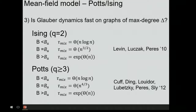We are not the first to look at this model. People have asked: is Glauber dynamics fast for the Potts model and the Ising model? For the Ising model, Glauber dynamics is fast up to some critical point, at which it has polynomial mixing time, and beyond the critical point the mixing time is exponential. For the Potts model, similarly: really fast with log n mixing time, then hitting a threshold at polynomial mixing time, and beyond the threshold it's exponential.